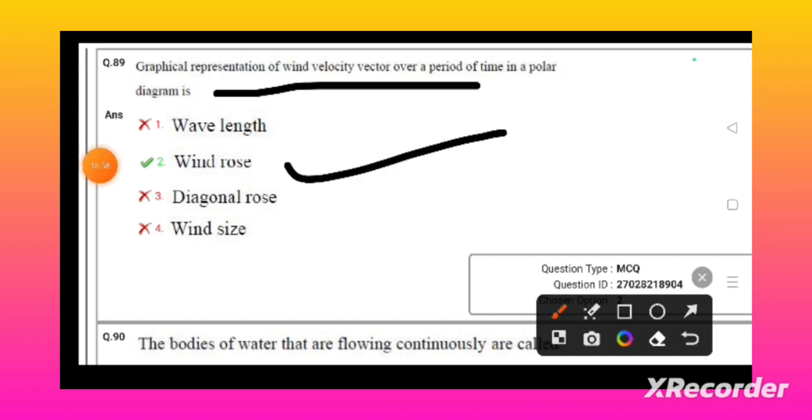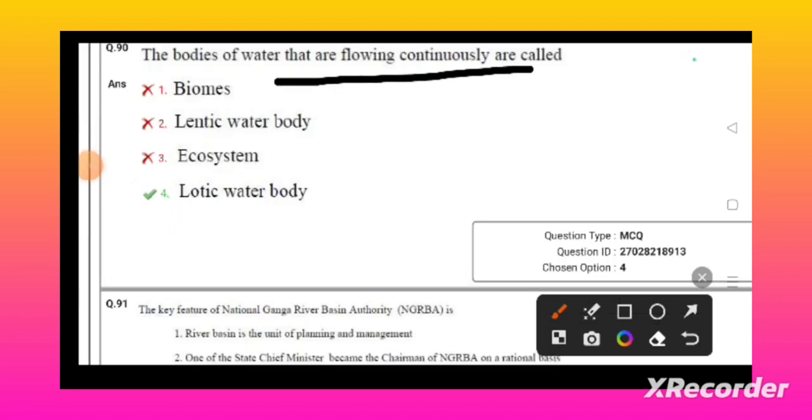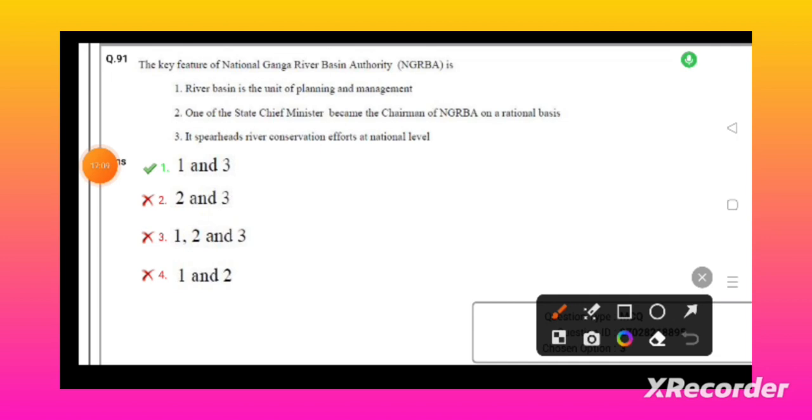The key features of Namami or National Ganga River Basin Authority (NGRBA) is river basin is the unit of planning and management. It spearheads the river conservation effort at the national level. These are key features of National Ganga River Basin Authority.